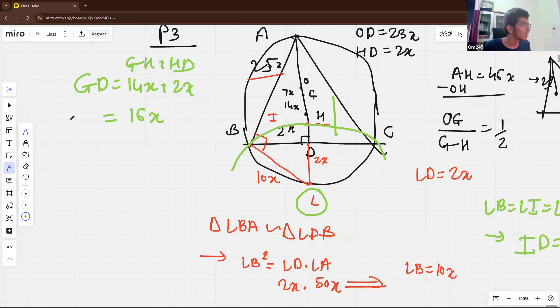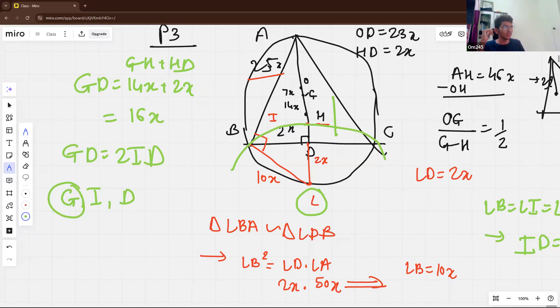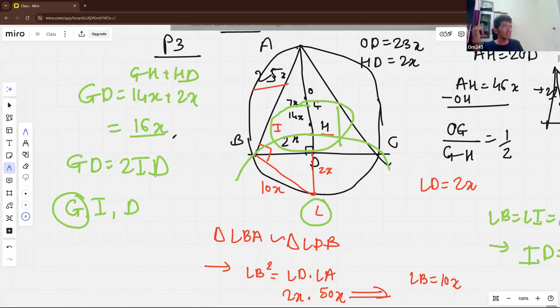So, because GD is 2 times of ID and G, I, D lie on the altitude of A, we get G lie on incircle. So if you draw incircle, you can even calculate the radius of incircle is 8X actually.